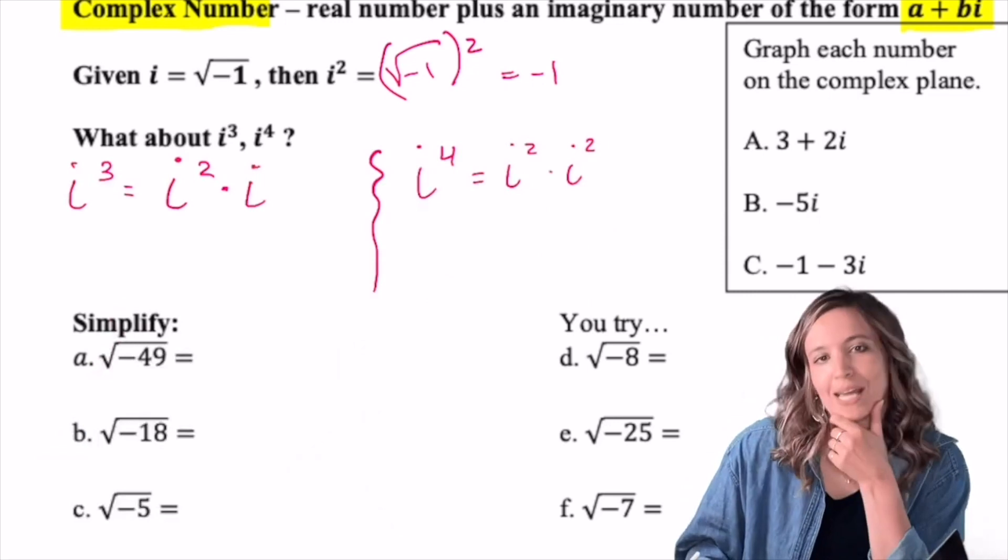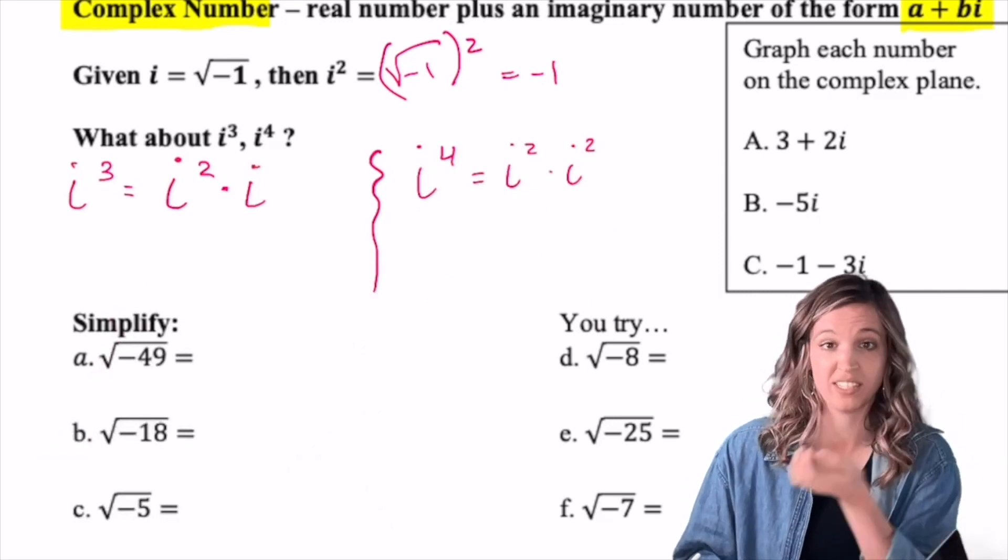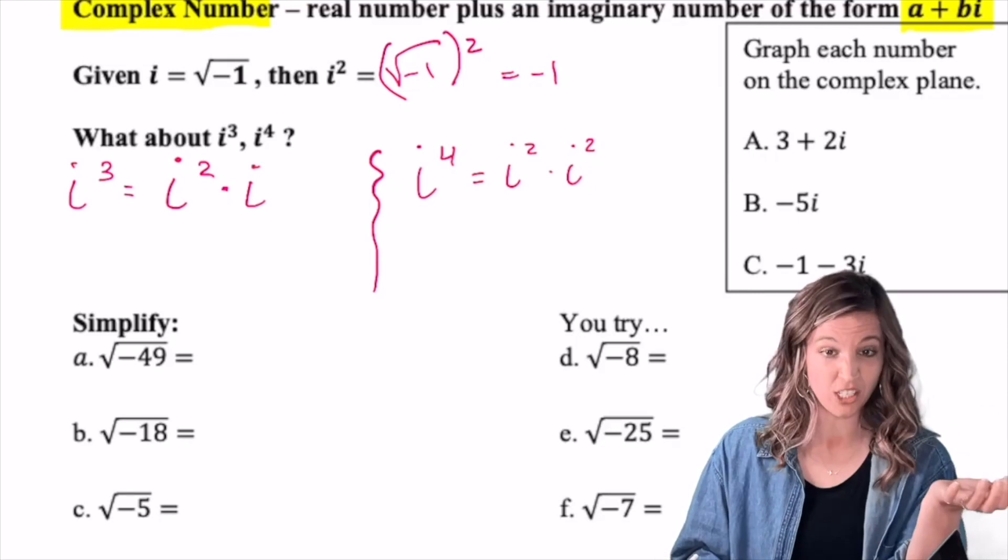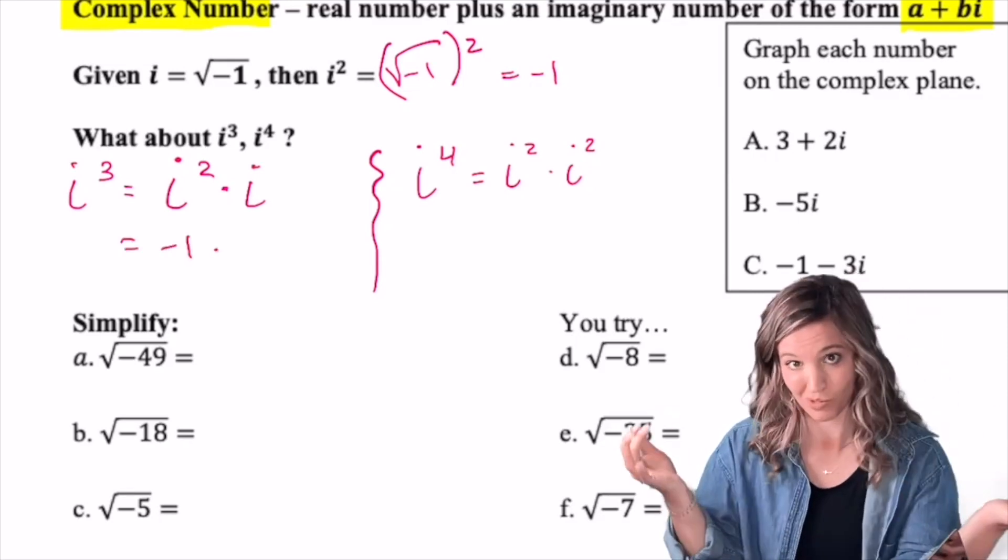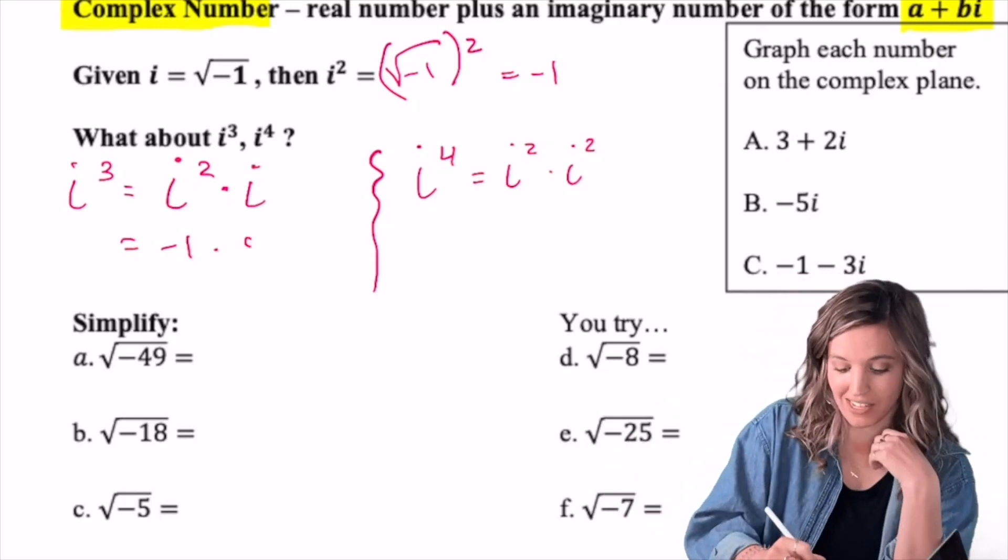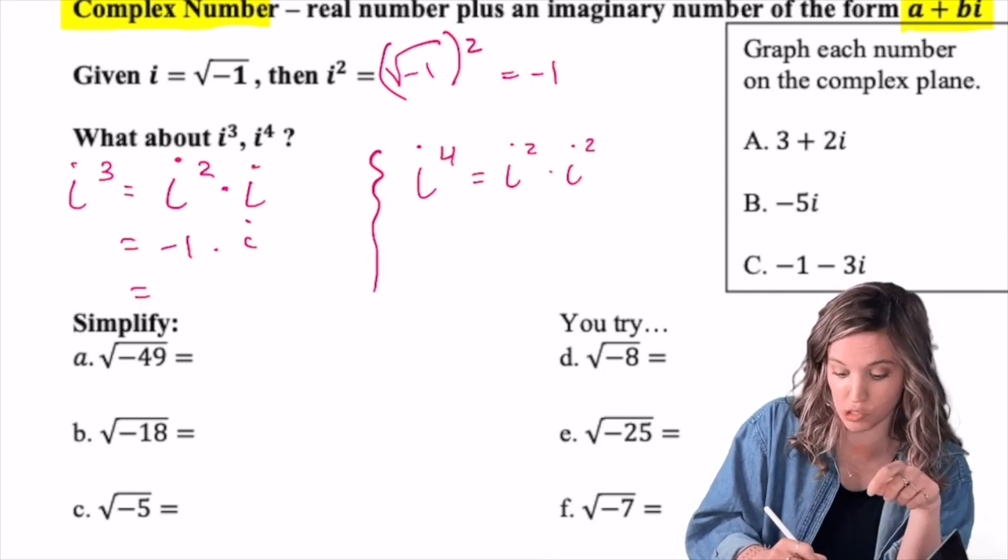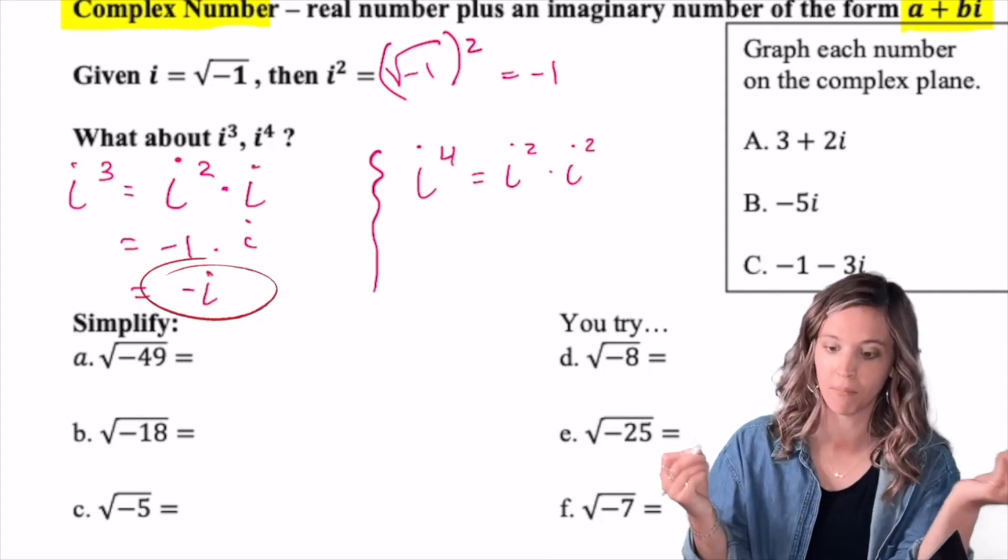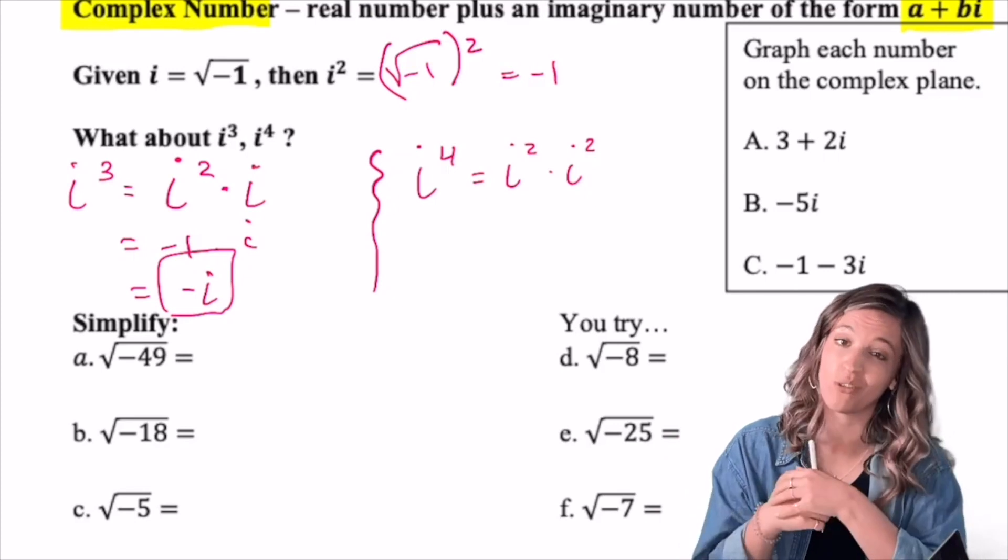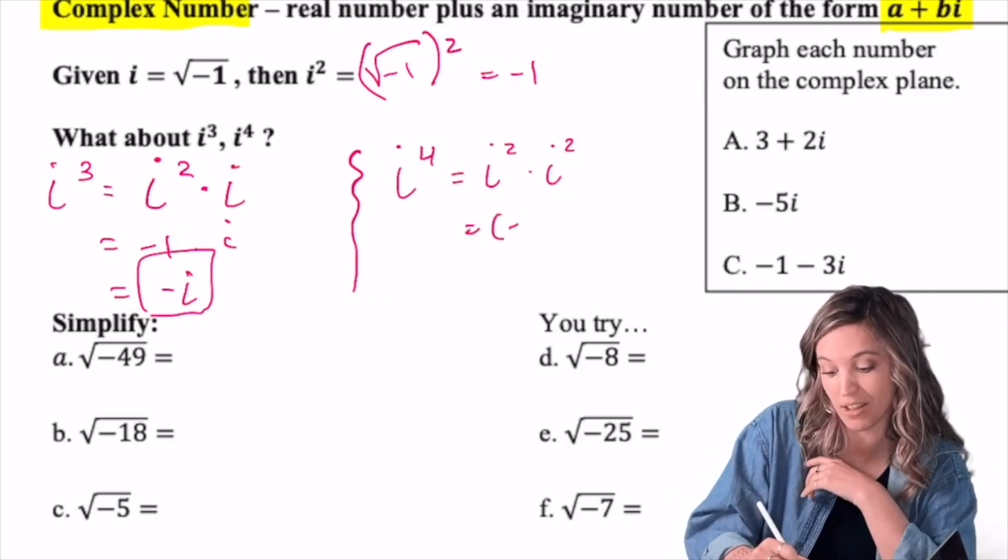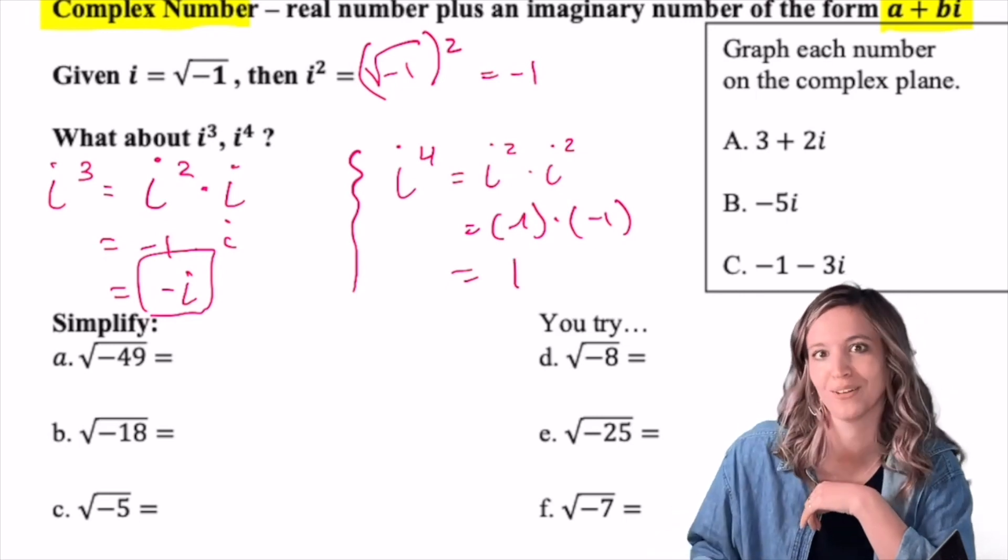Well, let's think about it together. i cubed could be rewritten as i squared times i. i squared we know is just negative one and i is the square root of negative one. So i cubed is really negative one times i. So negative i. i to the fourth, well i to the fourth is i squared times i squared. So that would just be negative one times negative one, which is positive one. So i to the fourth is also a real number one.